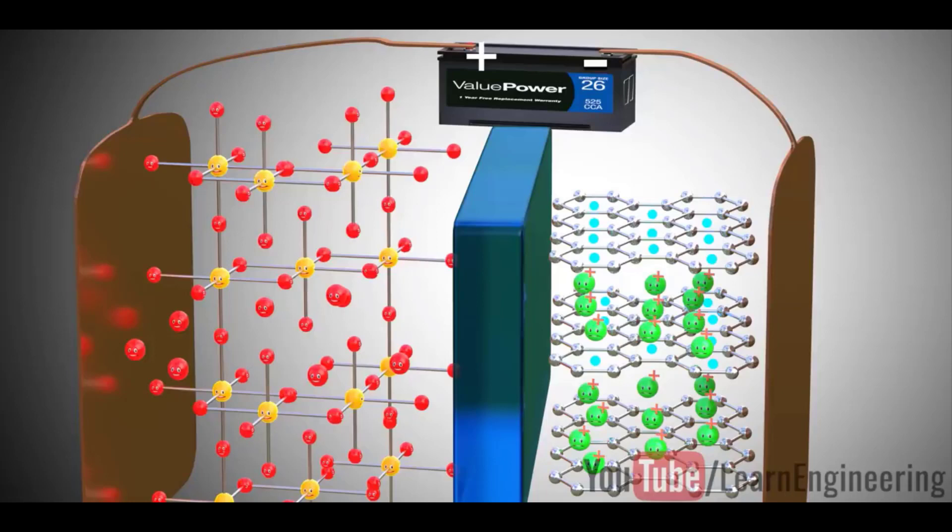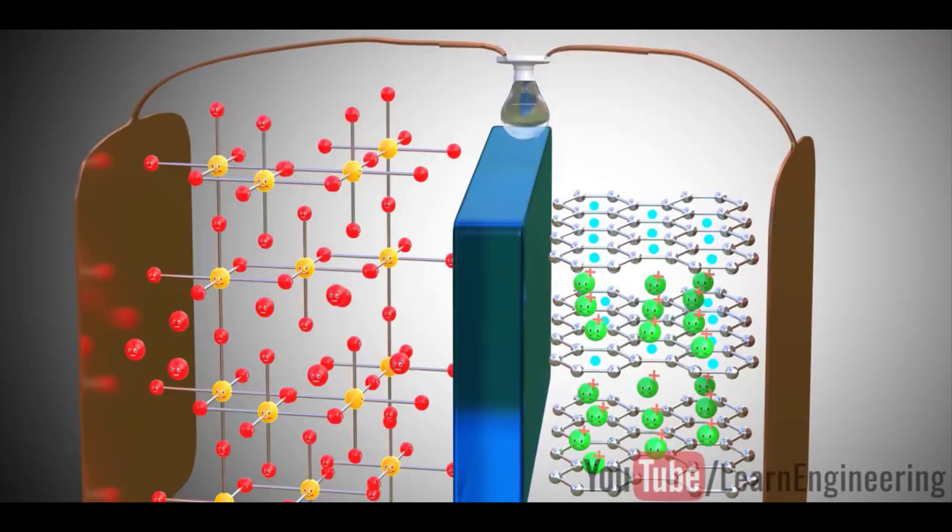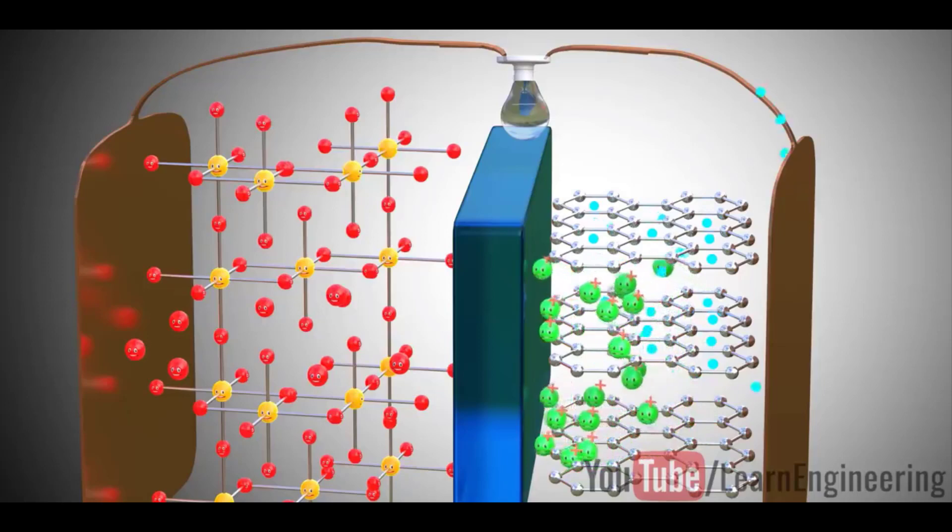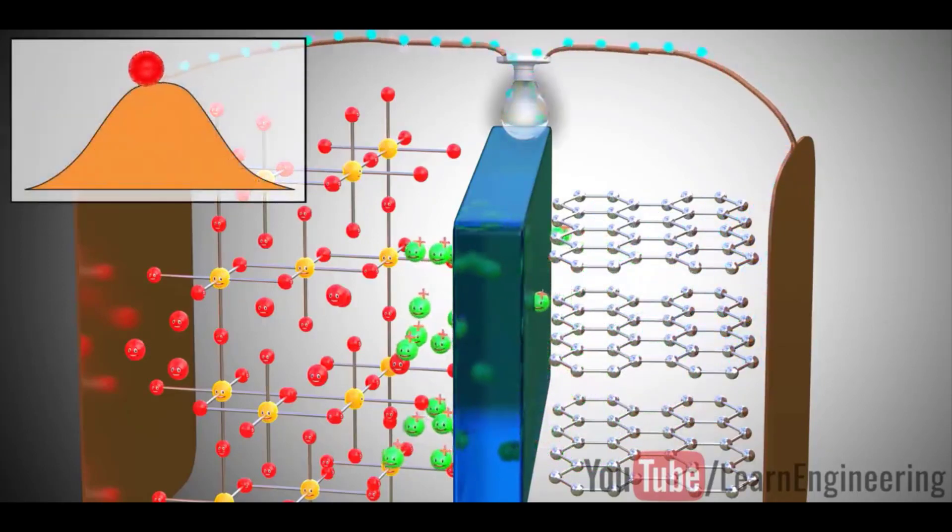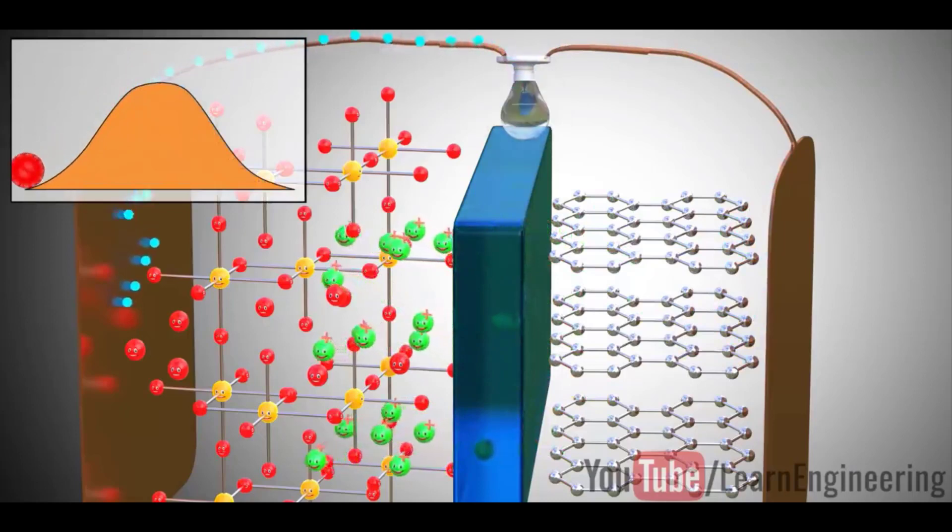In general, a fully charged battery is used to power up any circuit or load. As soon as the power source is removed and the load is connected, the lithium ions want to go back to their stable state as a part of the metal oxide. Due to this tendency, the lithium ions move through the electrolyte and electrons by the load. Thus, we get an electrical current through the load.